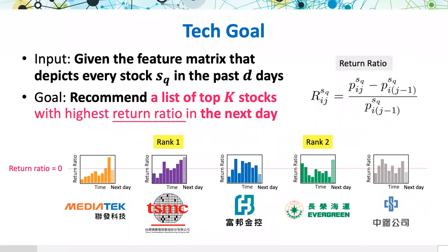Evaluating the potential of financial items and recommending profitable stocks are the most important goals in fintech. However, modern fintech applications focus on quantitative analysis, such as forecasting the prices of stocks and funds. In this work, we try to solve a more realistic, challenging problem that precisely recommends high profitable financial items based on its return ratio.